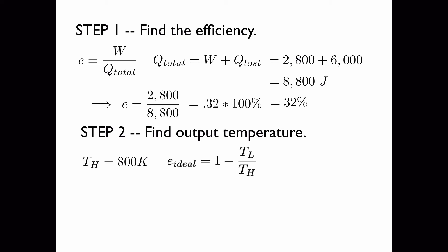And this is the formula for the efficiency of an ideal heat engine. It's 1 minus the temperature of the low reservoir, or the cooler reservoir, divided by the temperature of the hot reservoir. And we're going to set this equal to 0.32, the efficiency of our heat engine.